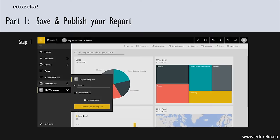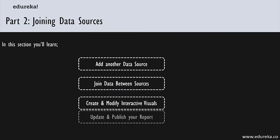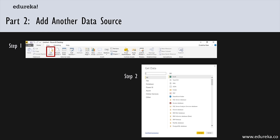We're now going into Part two: using multiple data sets. In this section we'll talk about adding data from other sources, joining data from multiple sources, creating more interactive visualizations, and updating the published data on the Power BI.com web service. To get additional data, you do the same thing as getting your first data set — go to the Get Data button.